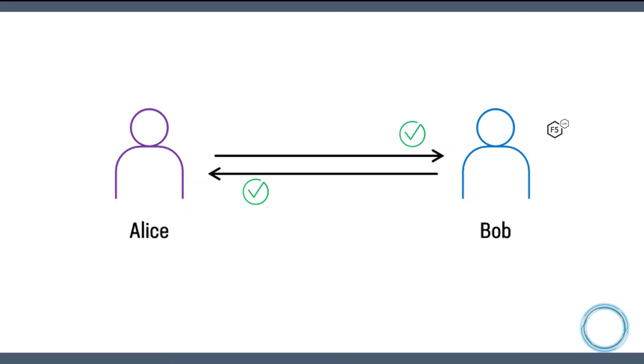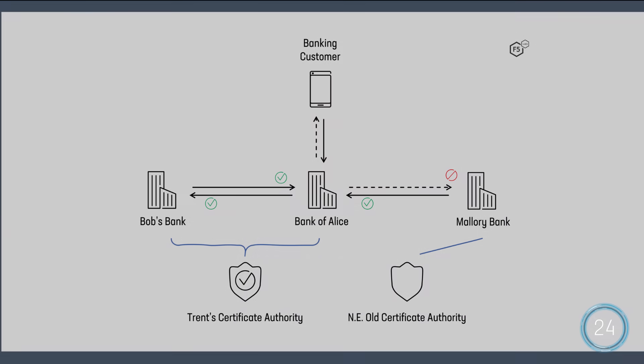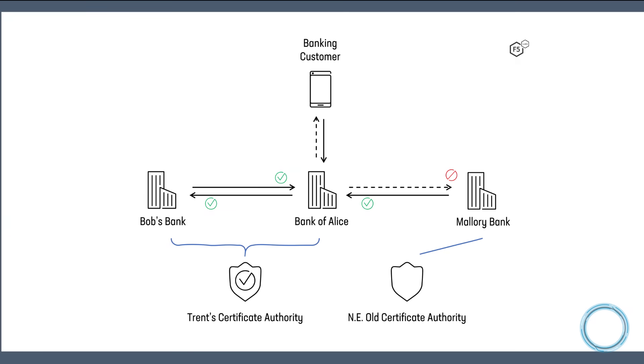But what if Alice and Bob need stronger authentication? In that case, they might want to mutually authenticate each other. Not only does Alice verify Bob's identity, but Bob authenticates and verifies Alice's identity too. Over the web, this can be performed using digital certificates and our old friend MTLS.